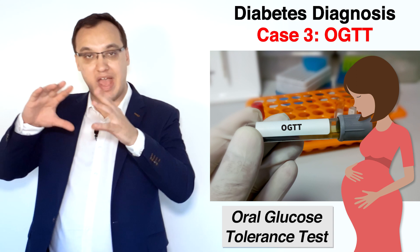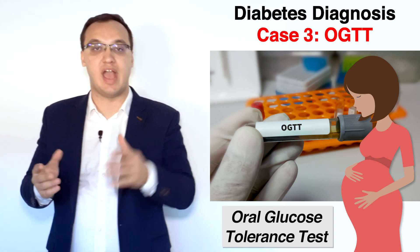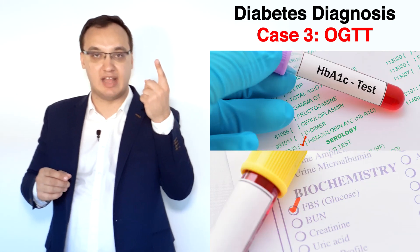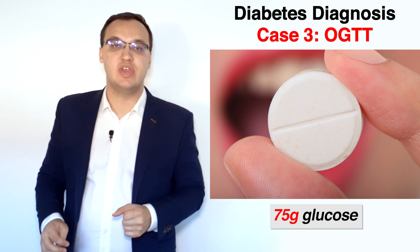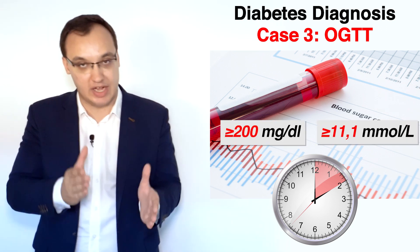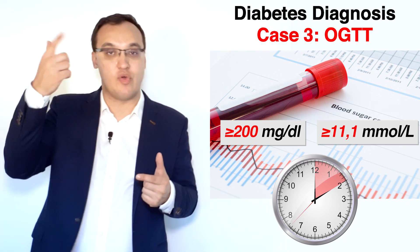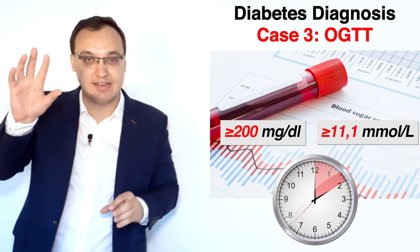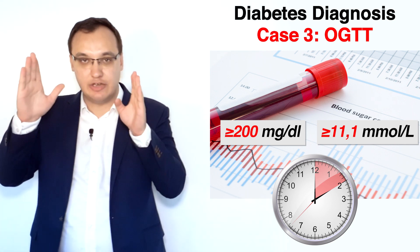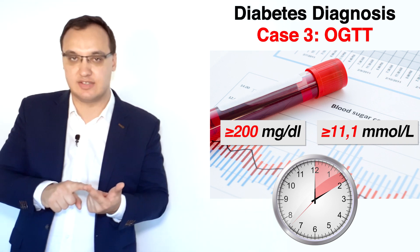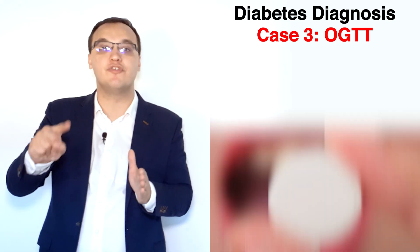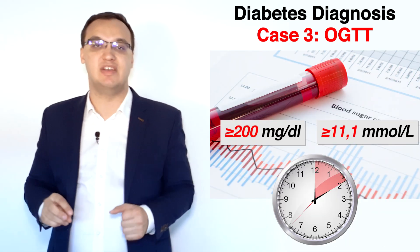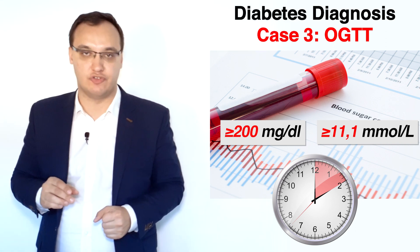The third option is something called OGTT — oral glucose tolerance test. This is the most sensitive test, and what we use for patients who are pregnant, for example. We give the patient 75 grams of glucose tablets, and after two hours we measure the blood glucose level. If it's more than 200 milligrams per deciliter or more than 11.1 millimoles per liter — with no symptoms needed — then we have a diagnosis.